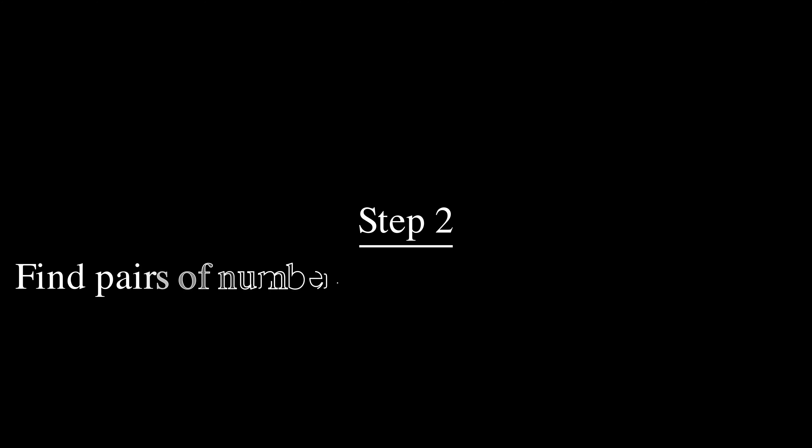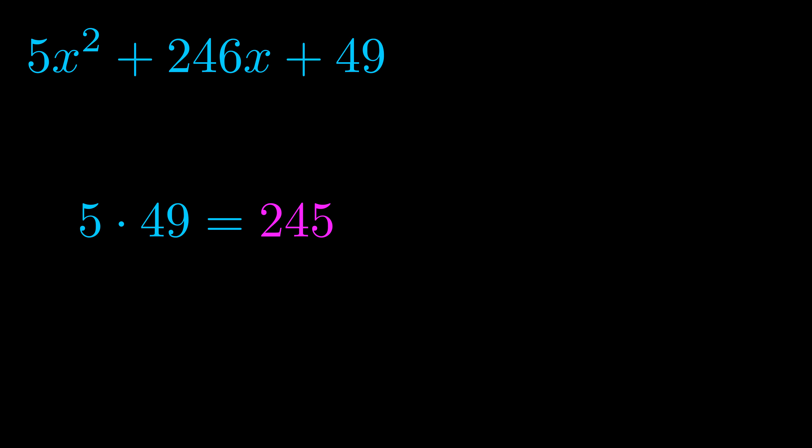Step two is to try to find all of the pairs which multiply to this number. Now it turns out you don't really need to find all of them but go ahead and write down as many numbers as you can that multiply to the magenta value for now. Pause the video and resume when you're ready to continue.